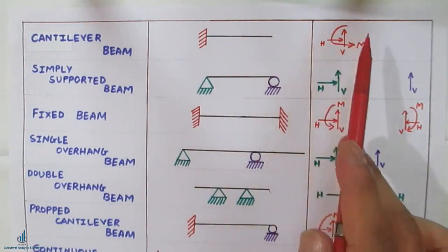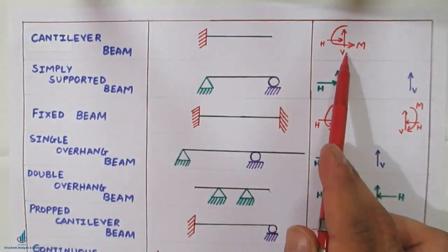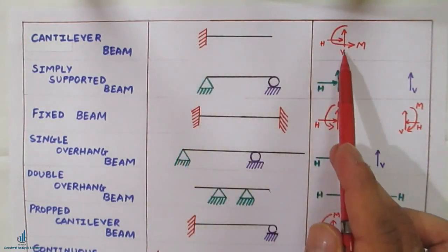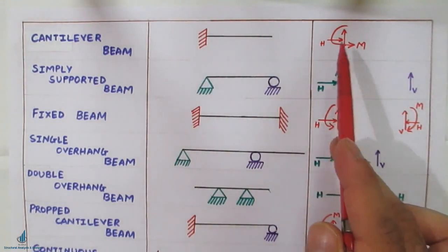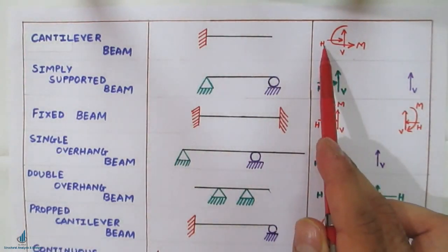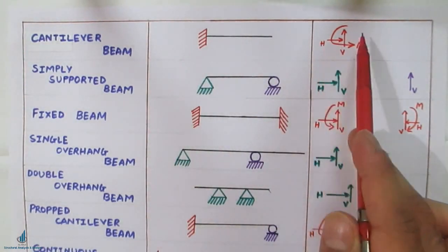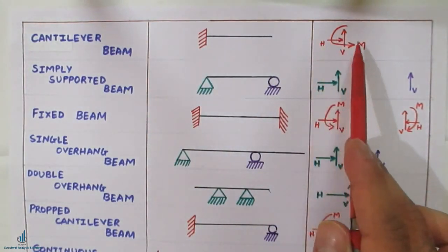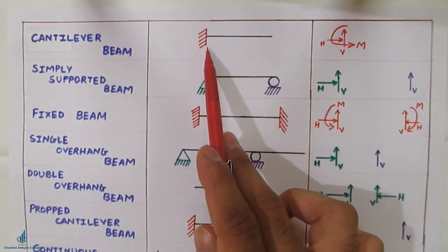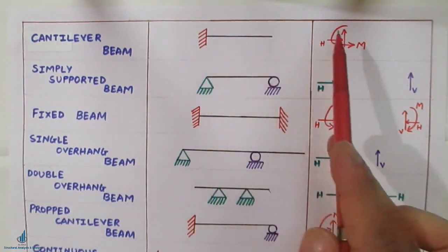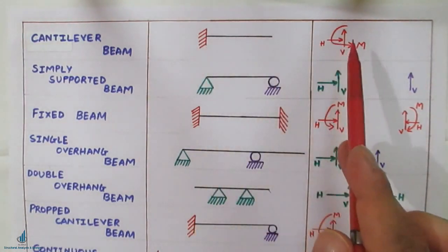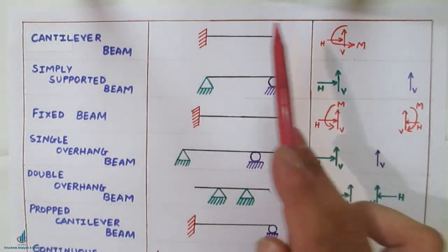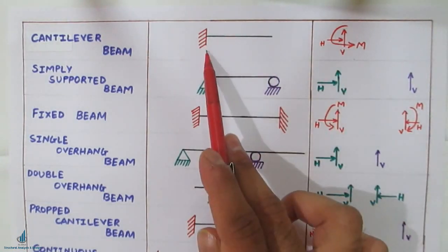The reactions at the fixed end are: one vertical reaction, one horizontal reaction, and one moment. So there are a total of two reactions and one moment for the fixed end.